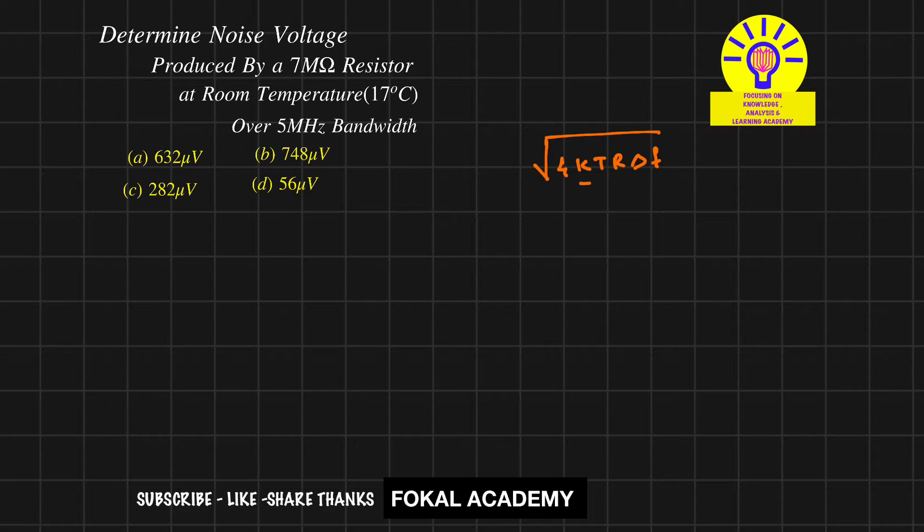Here k means Boltzmann constant. That is k equal to constant value, 1.38 into 10 power minus 23 Joules per Kelvin.